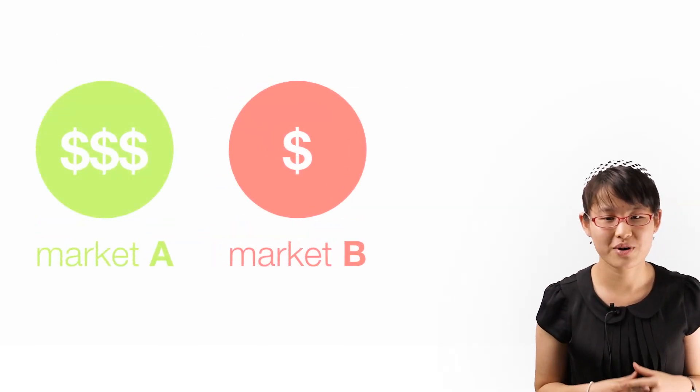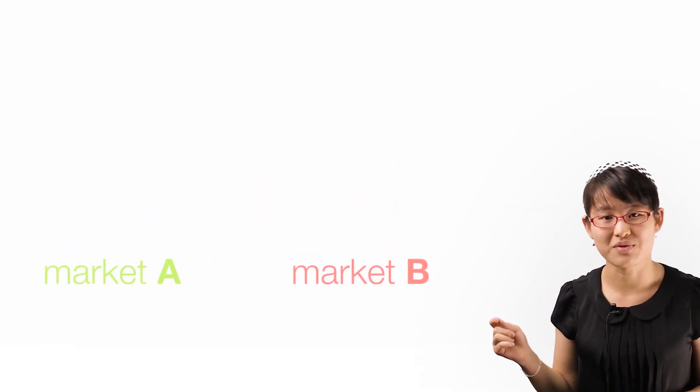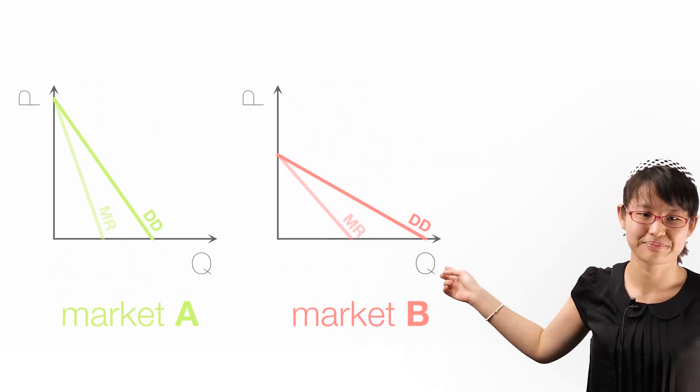Assume that a firm sells an identical product in two separate markets, A and B, with demand and MR curves as shown here.